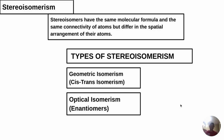Now, stereoisomers. There is another video where I will explain stereochemistry in more detail, but today we are only covering the basics. Stereoisomers have the same molecular formula and the same connectivity of atoms, but they differ in the spatial arrangement of their atoms. There are two types of stereoisomers: geometric isomerism — which we can also call cis-trans isomerism — and optical isomerism, which we can also call enantiomers.